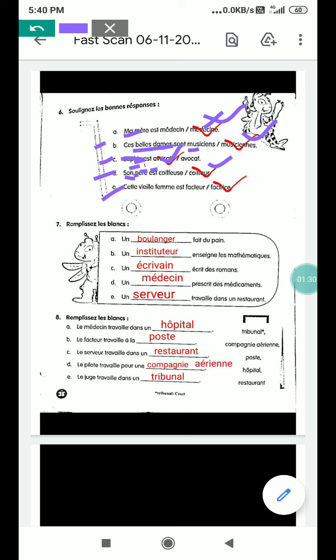Part E, cette vieille femme. Vieille femme is an old lady. And le facteur, this facteur is a postman, post to man. So this is your exercise one. Then see the exercise seven.